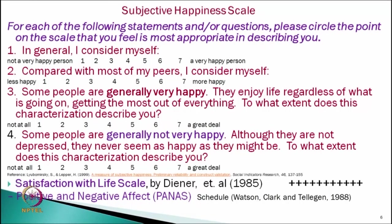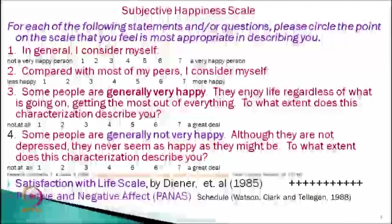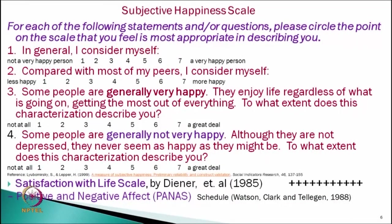The third question is: some people are generally very happy — they enjoy life regardless of what is going on, getting the most out of everything. To what extent does this characterization describe you? Not at all (1) to a great deal (7). The fourth question: some people are generally not very happy — although they are not depressed, they never seem as happy as they might be. To what extent does this characterization describe you?